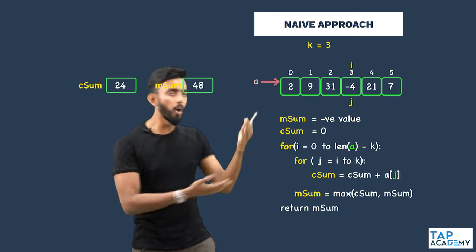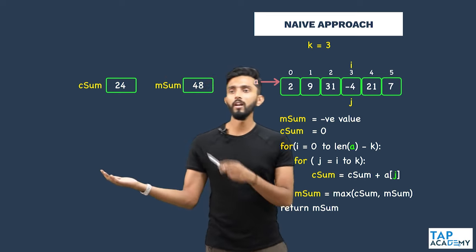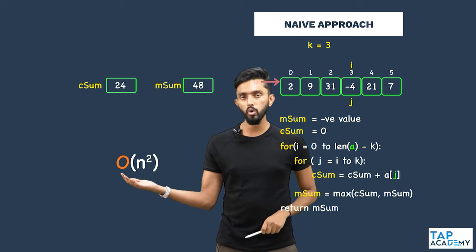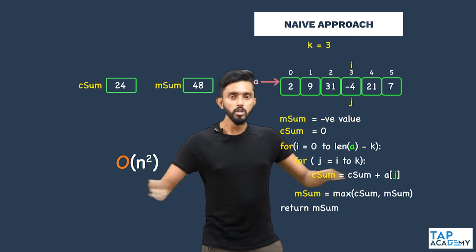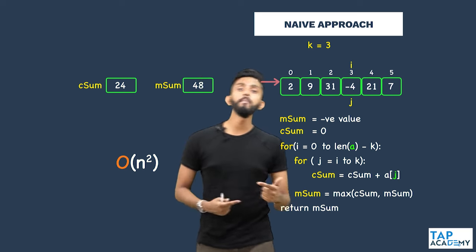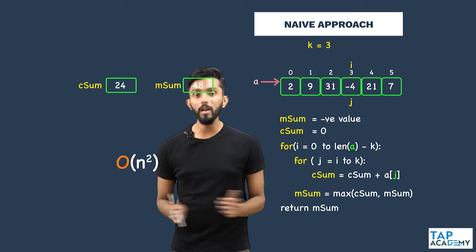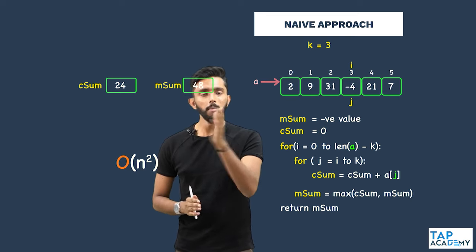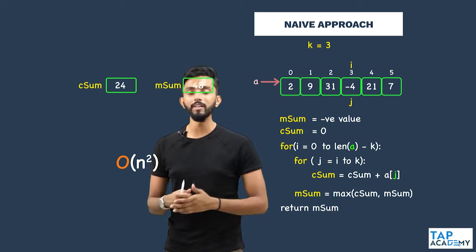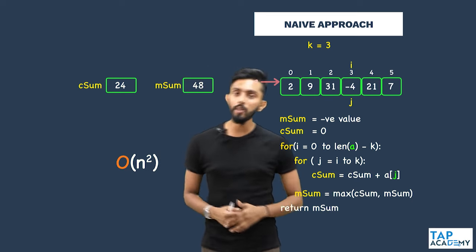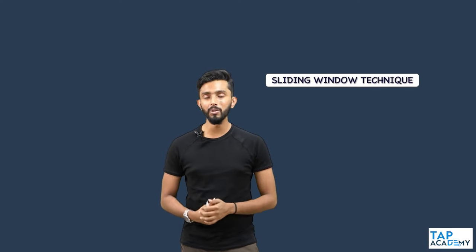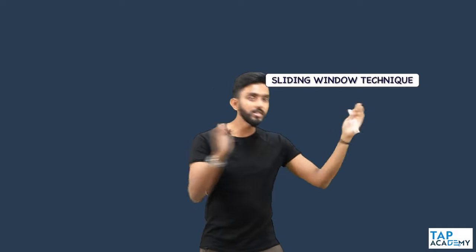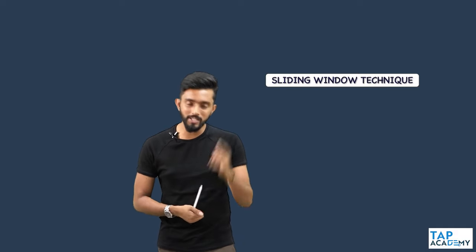This naive approach is O(n²). The question is: can this be reduced to linear time — O(n) complexity? Yes, absolutely — and that is where the sliding window technique comes into the picture.